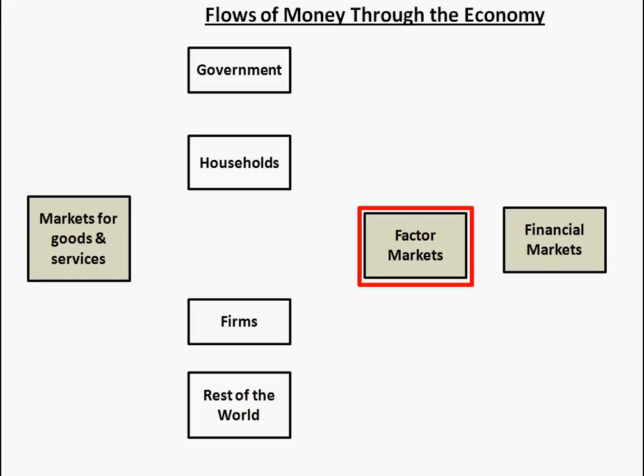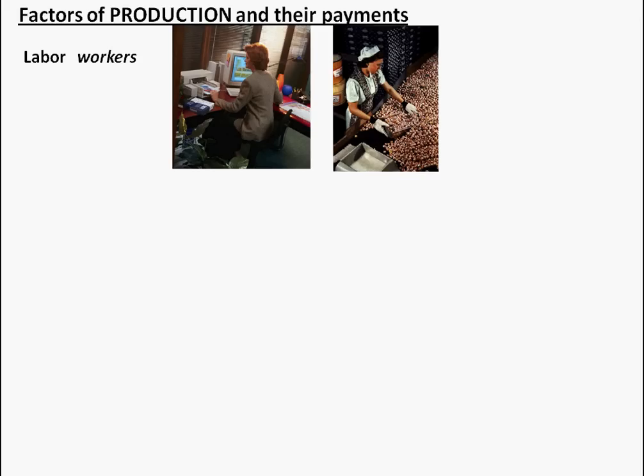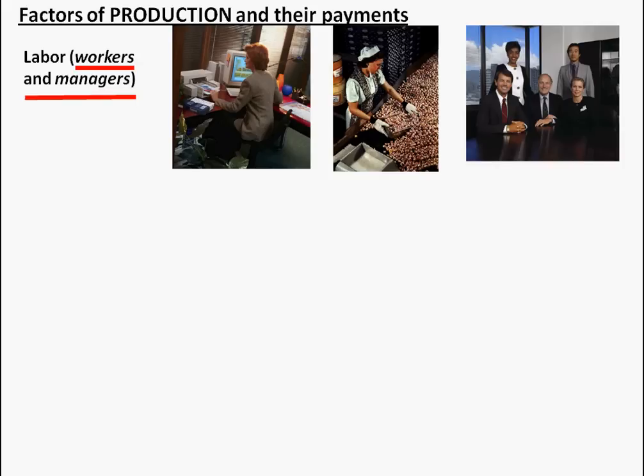Let's talk for a moment about the factor markets. This is factors of production. The first factor of production is labor — those are the workers, but it's also the managers. In economic terms, we pay labor either wages or salaries depending on the level of the person.